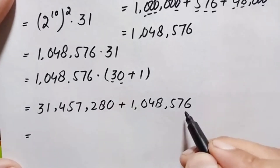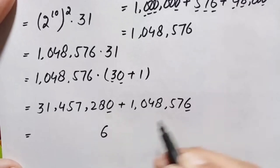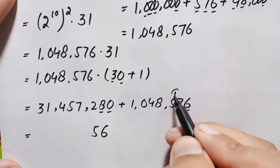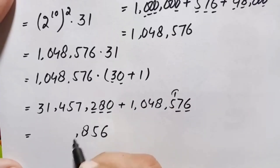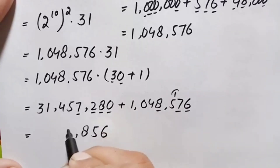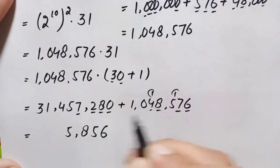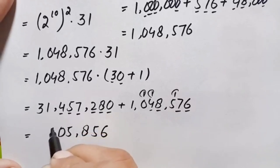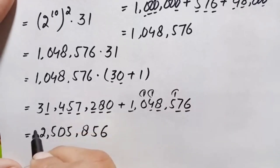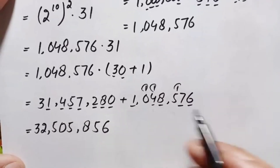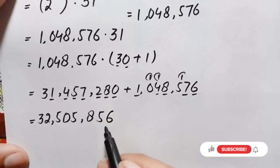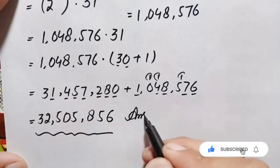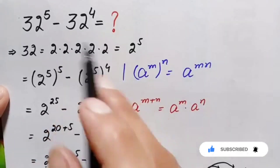Finally, we add 31,457,280 and 1,048,576. Adding digit by digit from the right: 6 plus 0 is 6; 7 plus 8 is 15, write 5 carry 1; 5 plus 1 plus 2 is 8; 8 plus 7 is 15 plus carry gives 5, carry 1; next digits sum to 0 carry 1; then 1 plus 1 is 2; and 3 remains. The final answer is 32,505,856.